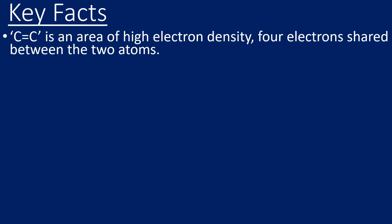Let's cover the key facts for this reaction then. So the carbon-carbon double bond in the alkene is an area of high electron density. There are four electrons shared between those two atoms.